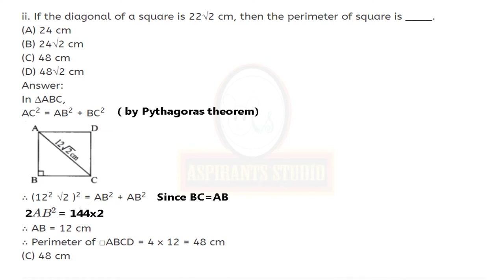If the diagonal of a square is 22 square root of 2 cm, then the perimeter of the square is dash. In triangle ABC, by Pythagoras theorem, AC squared equals AB squared plus BC squared. Hypotenuse squared equals one side squared plus the other side squared. Now put all the values: 22√2 (the whole square) is equal to AB squared plus AB squared.